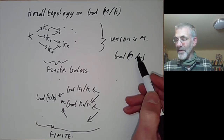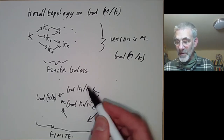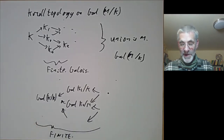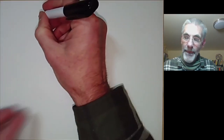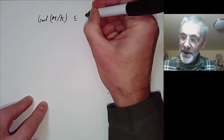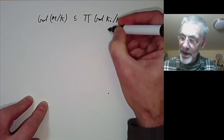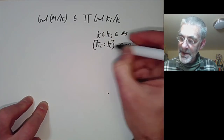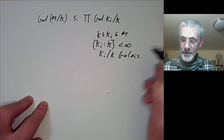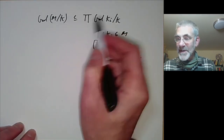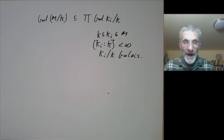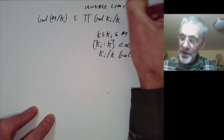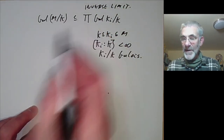An element of the Galois group of M over K gives an element of each of these finite groups, and all these elements must be compatible. So the Galois group of M over K is contained in the product of all the Galois groups of K_i over K (where K_i is finite Galois over K), as the subset of compatible selections. If you've done inverse limits, you know this is called an inverse limit or projective limit — so the Galois group is just an inverse limit of finite groups.